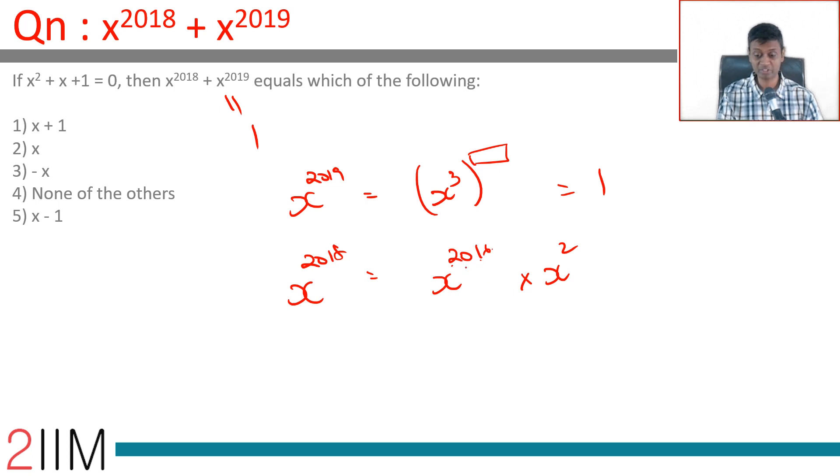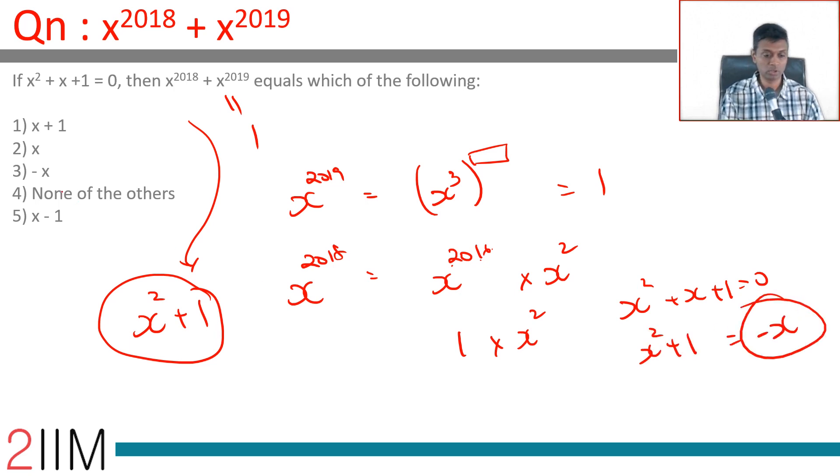So this expression is nothing but x² + 1. What is x² + 1? We know that x² + x + 1 = 0, so x² + 1 = -x. Therefore, x^2018 + x^2019 = x² + 1 = -x.